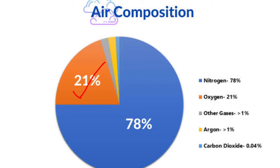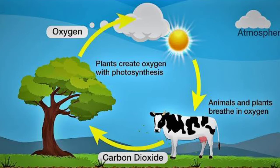This 21% of oxygen is always maintained because of the oxygen cycle. So let's understand in detail about the oxygen cycle.